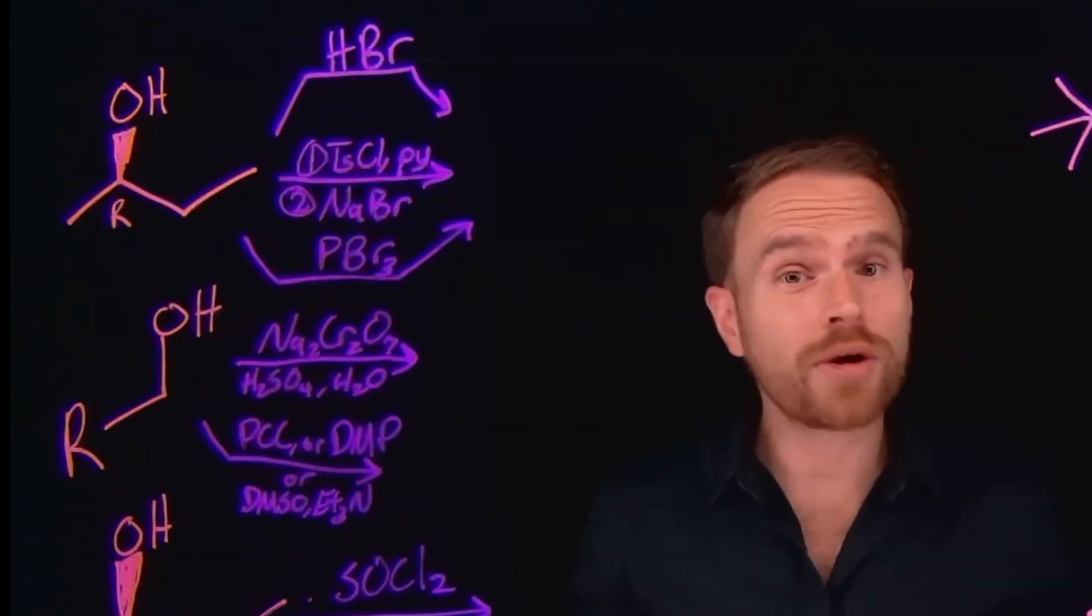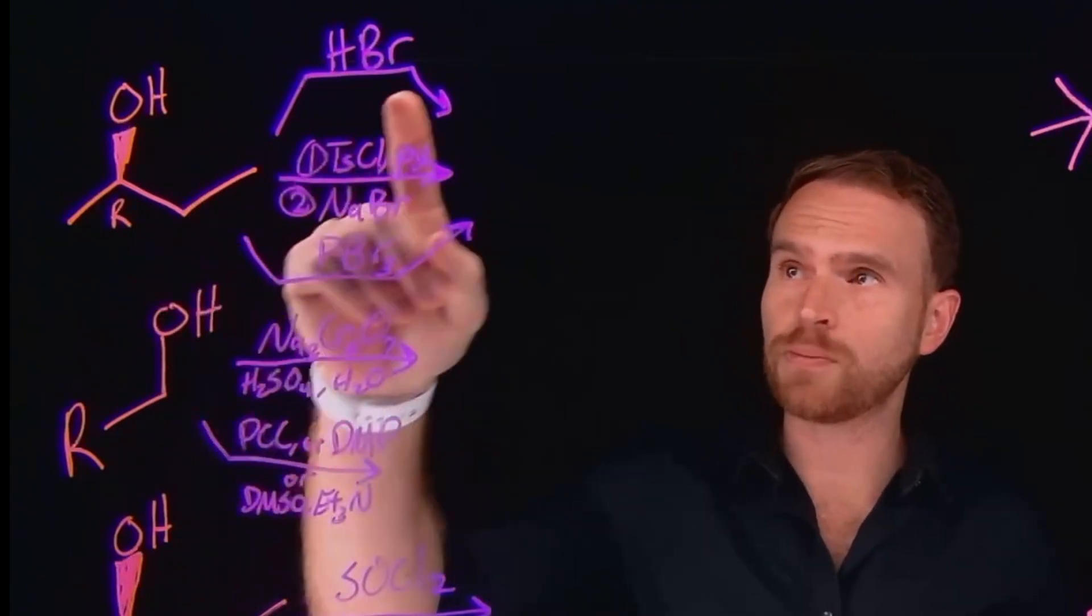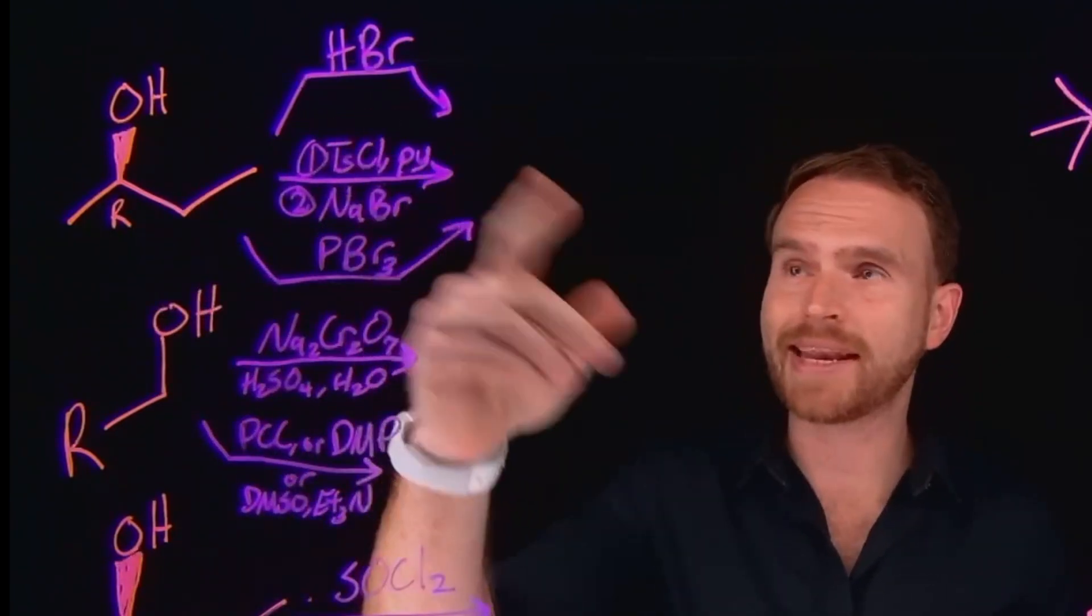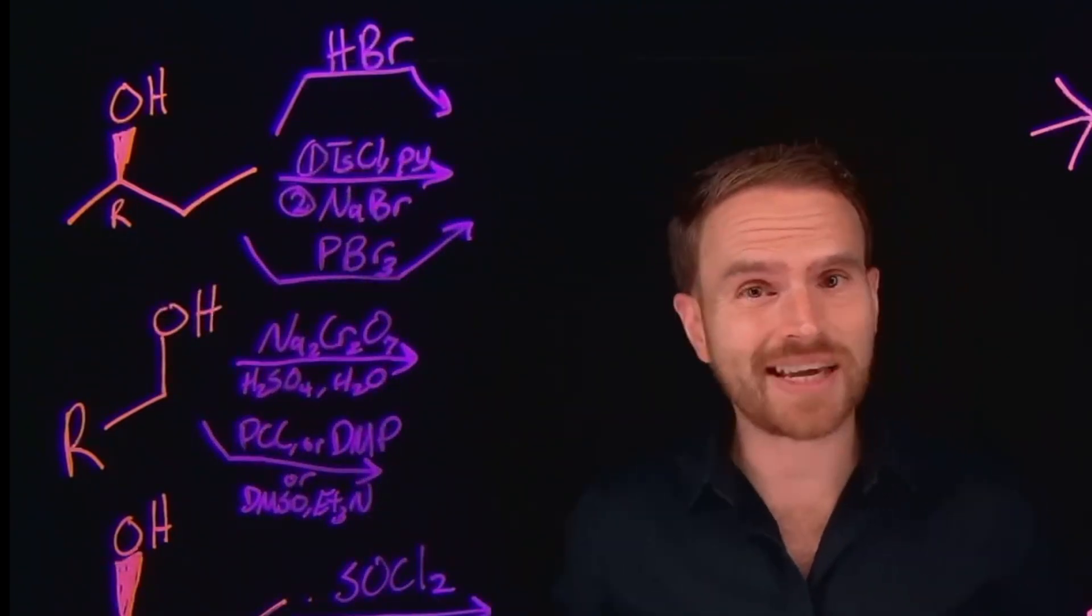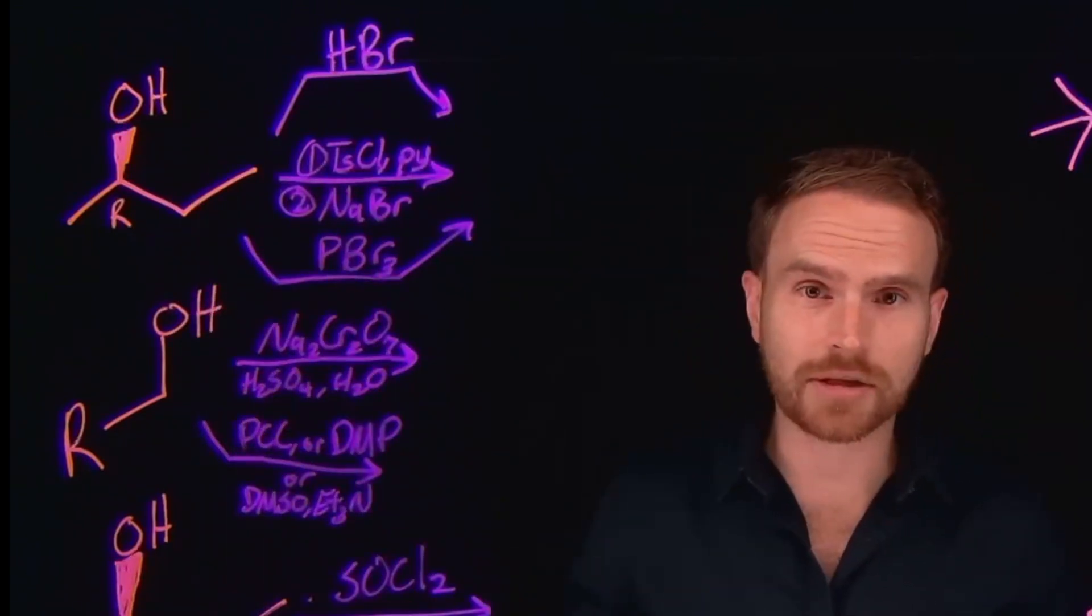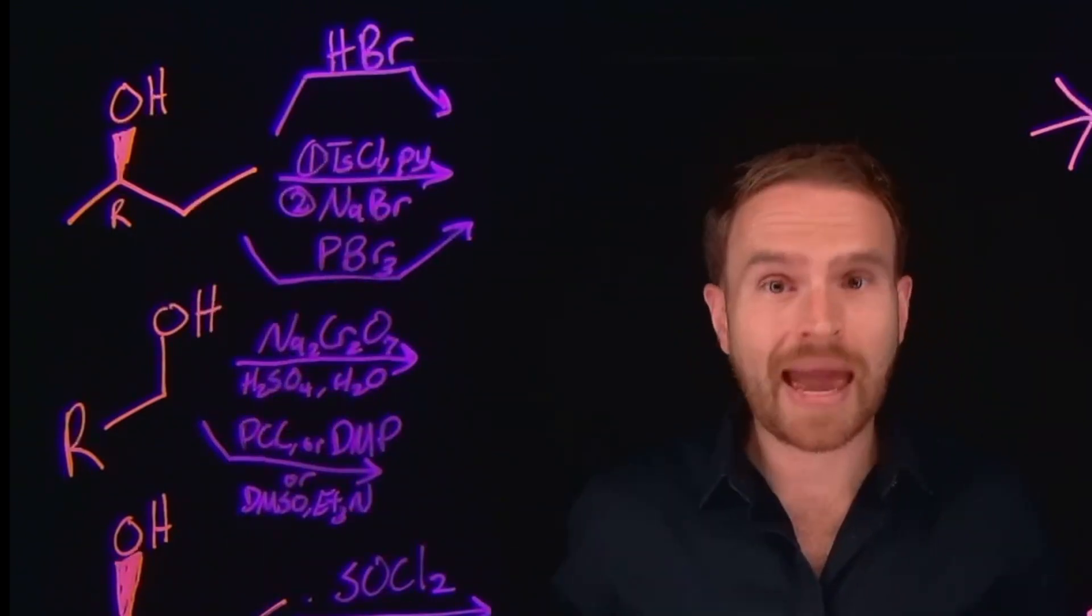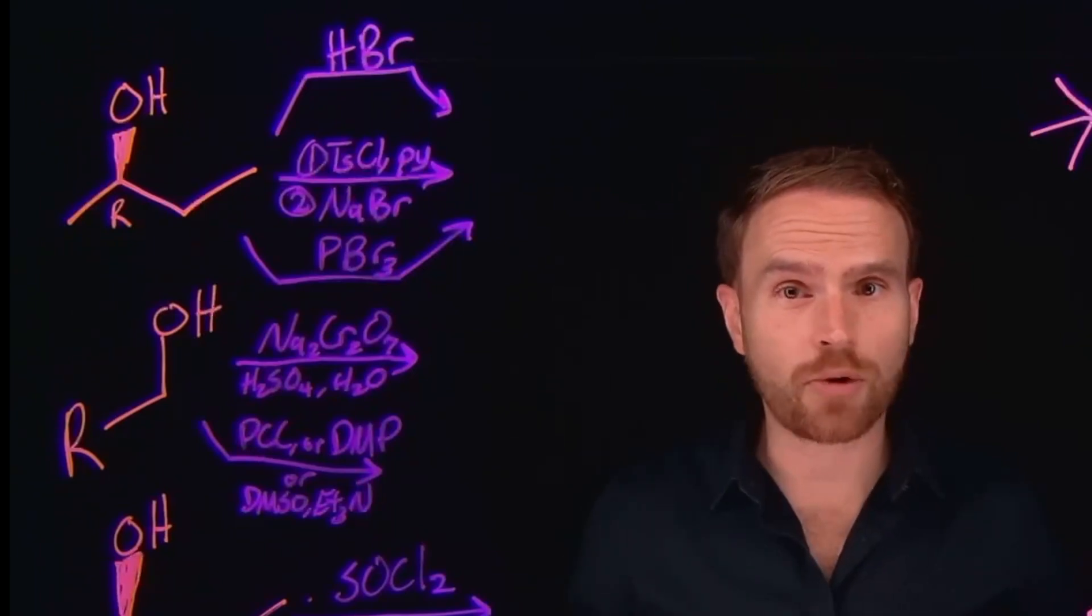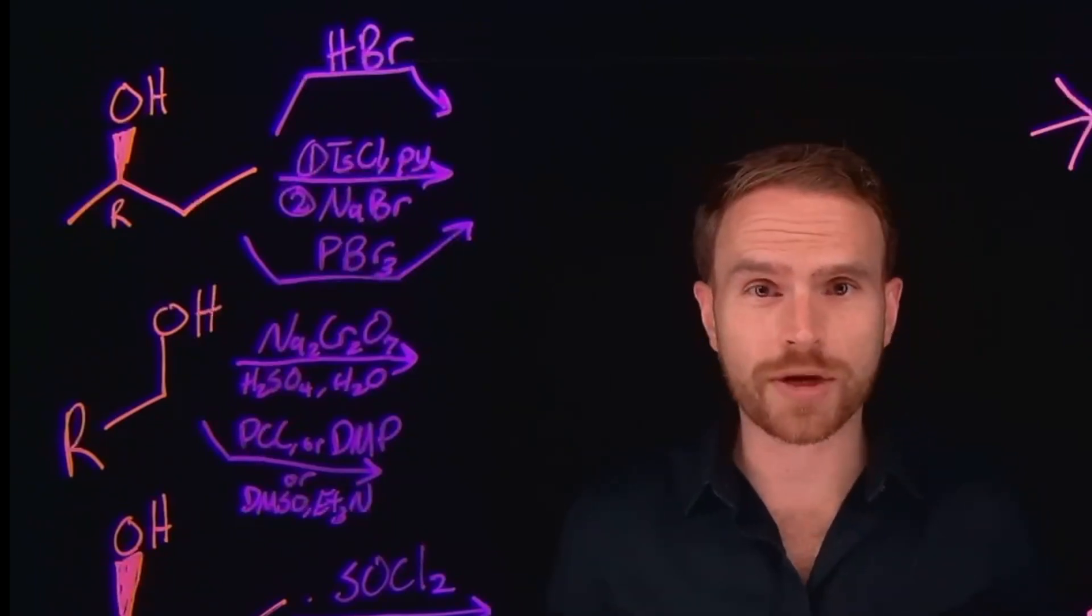For example, one of the easiest ways to substitute an OH group for a bromide is to add HBr. This follows an SN1 type mechanism where first you protonate the OH group, it leaves as a good leaving group leaving behind a carbocation. Depending on the stability of that carbocation, you could potentially undergo rearrangements.